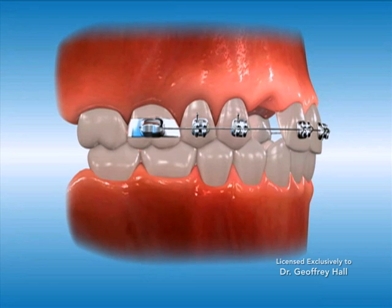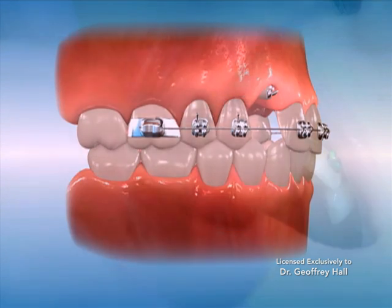Next, the impacted tooth or teeth are exposed by removing a small piece of tissue covering the tooth. This is done so that a bracket may be affixed to the impacted tooth.